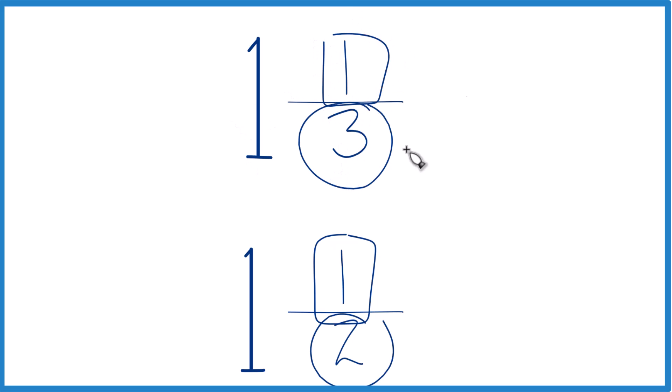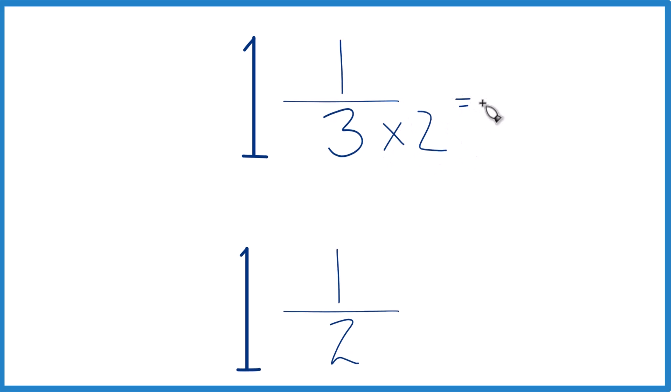figure out whether 1 and 1 third is greater than, less than, or equal to 1 and 1 half. Let's do that. I'm just going to multiply the 3 times 2. Because when I do that, I get 6.